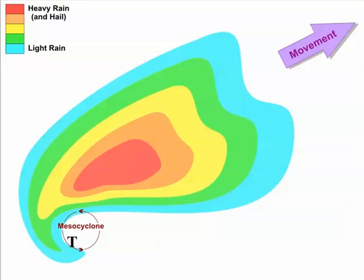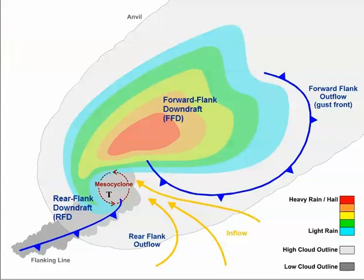Now let's add some more pieces to our model of a supercell. This idealized image shows radar reflectivity and the cloud outline associated with a classic supercell moving toward the northeast. You can see the storm's inflow, traced by these arrows, racing in and then ultimately rising in the rotating updraft.